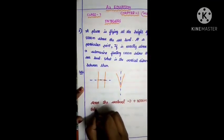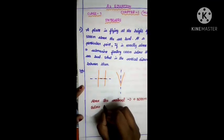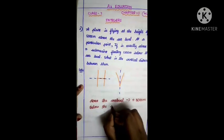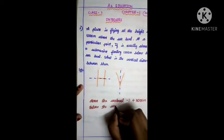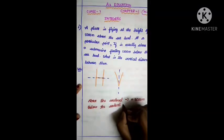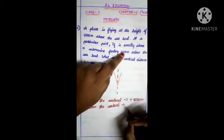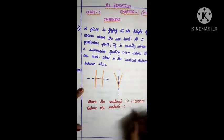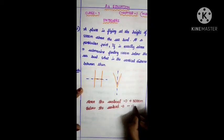Below the sea level, which is 1200, so below means minus 1200 meters.